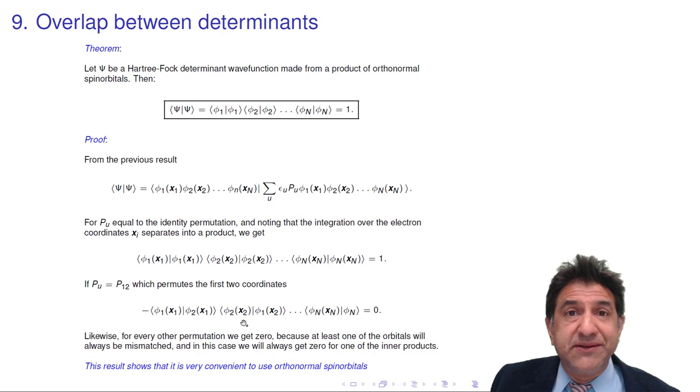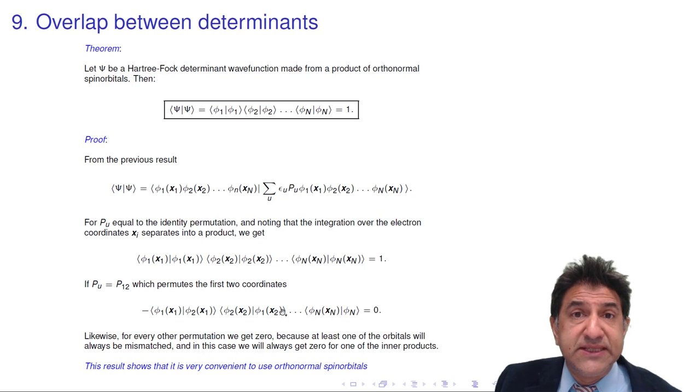Now here comes the trick. The trick is for all other permutations, we will always get a mismatch somewhere along the line. And with the mismatch of orbitals, they integrate to 0. So no matter what of these n factorial permutations we do, they're all 0, except for the very first one, where we do nothing. Fantastic. We've proved it.